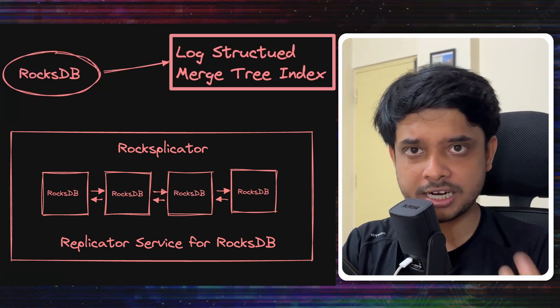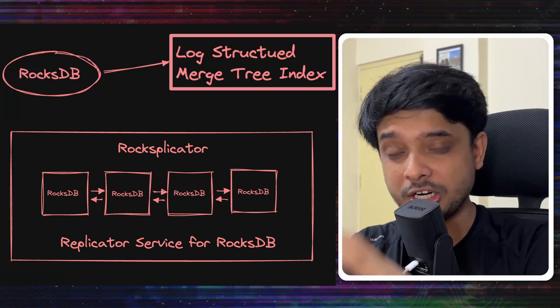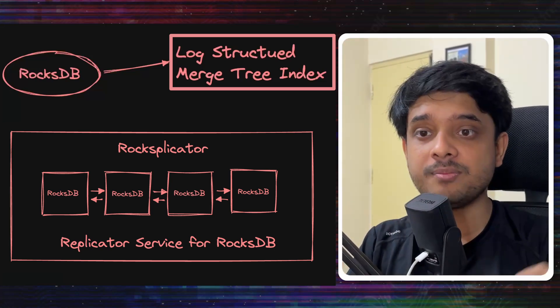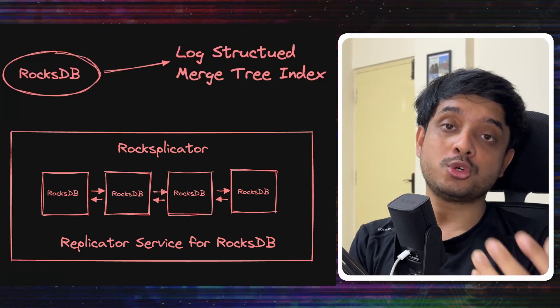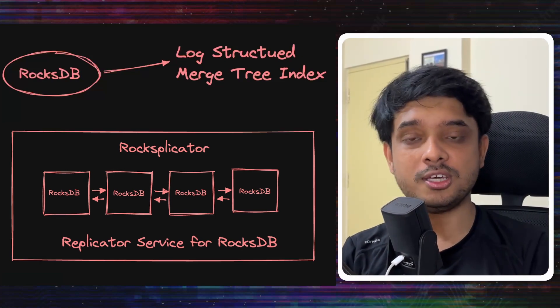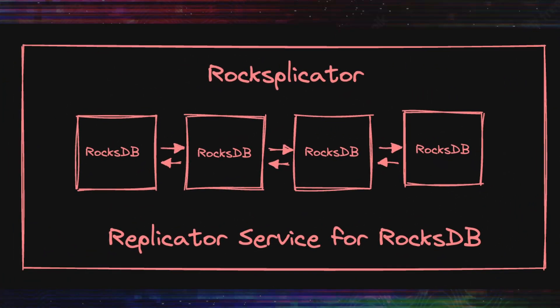I have already made a video on LSM trees. So go watch that and you will understand the index in detail. Moreover what Pinterest did was to build a distributed version of RocksDB. They created Rocksplicator which is a replication service for RocksDB. It makes RocksDB highly available and fault tolerant by making it distributed by replicating its data across multiple nodes.